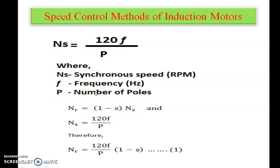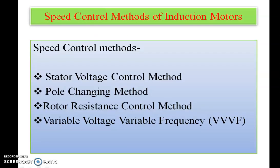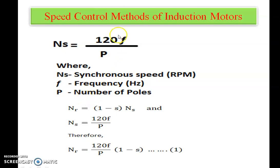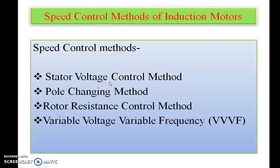So we will see about how the speed control mechanism is applied for induction motors. This is the basic formula used to control the speed of induction motor - we are going to control the NS, and obviously if we control NS it will change the actual speed NR. These are the methods used for speed control: first, stator voltage control method; second, pole changing method; third, rotor resistance control method; and last, variable voltage variable frequency, that is VVVF.